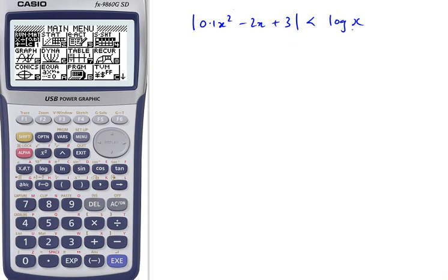You're asked to find the values for which log(x) is greater than the absolute value of the function on the left, |0.1x² - 2x + 3|.